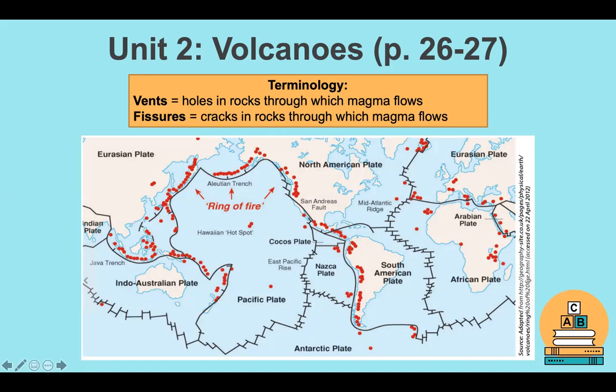These red dots on the map indicate active volcanoes. You'll see it's more predominantly wherever there are boundary lines — there are some odd ones here and there, but it's more predominant along the boundary line. The terminology for this week: vents refer to holes in rocks through which magma flows, and fissures refer to the cracks in rock through which magma flows. So even though they sound similar, vents are holes and fissures are cracks.